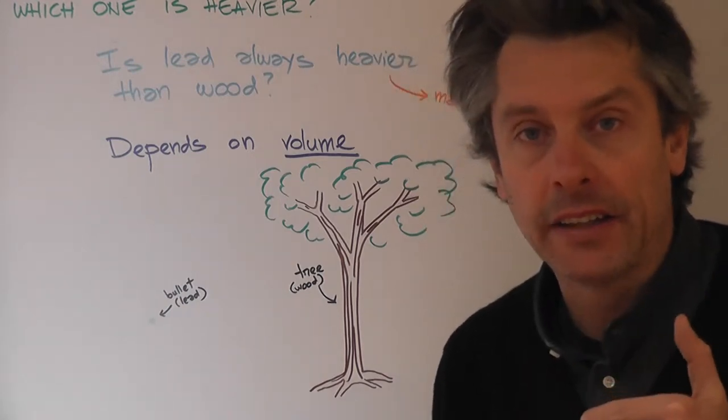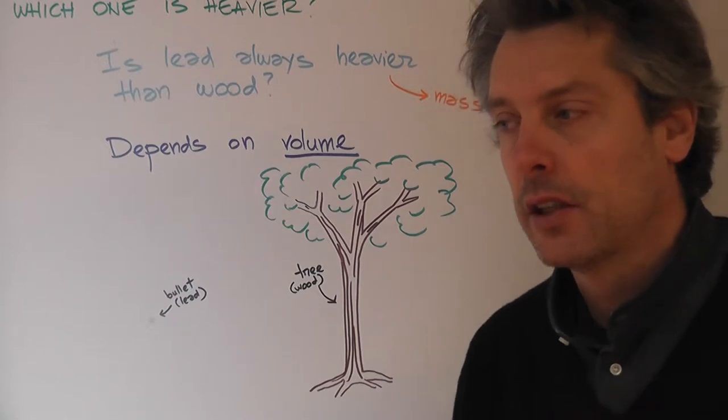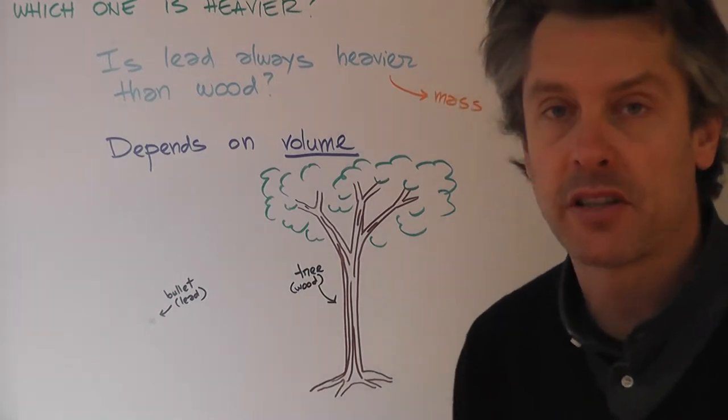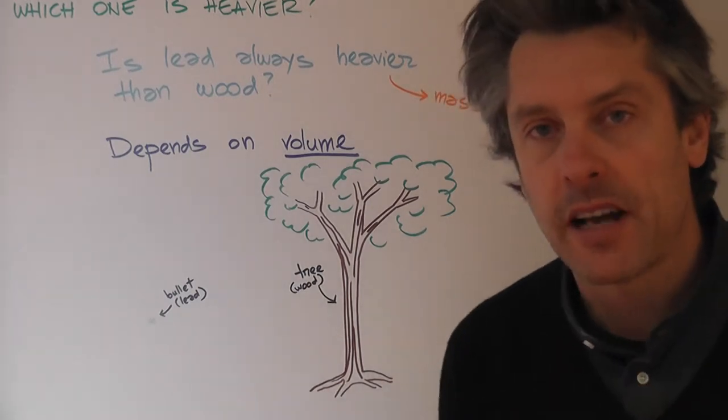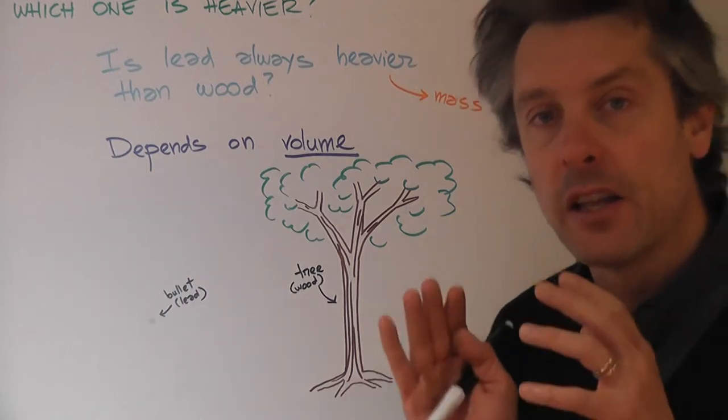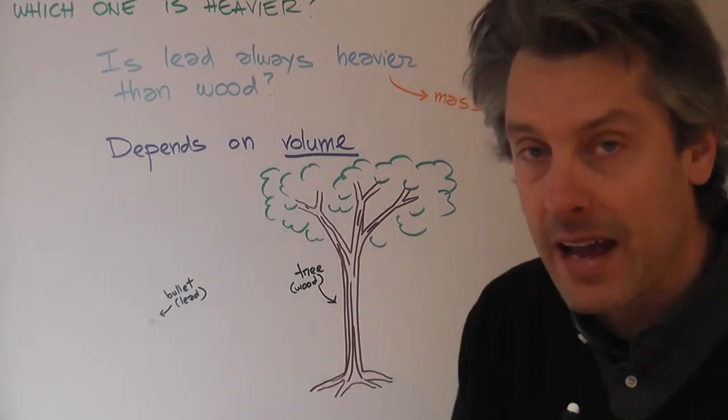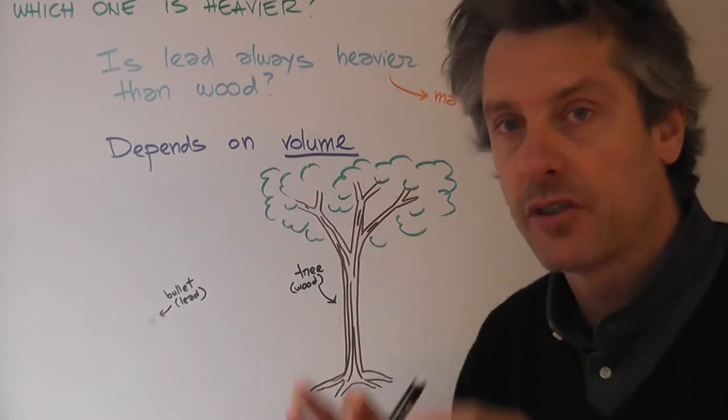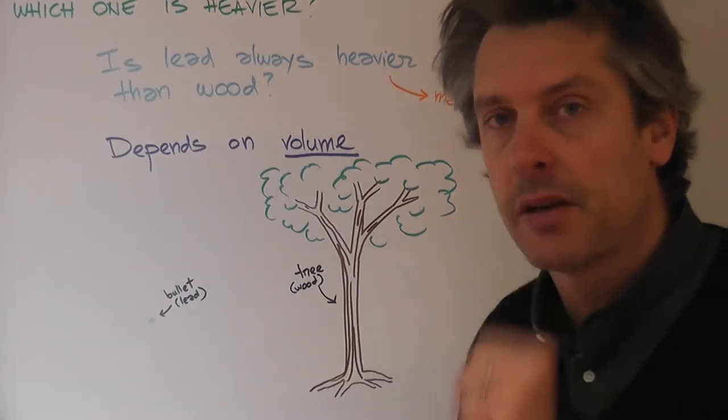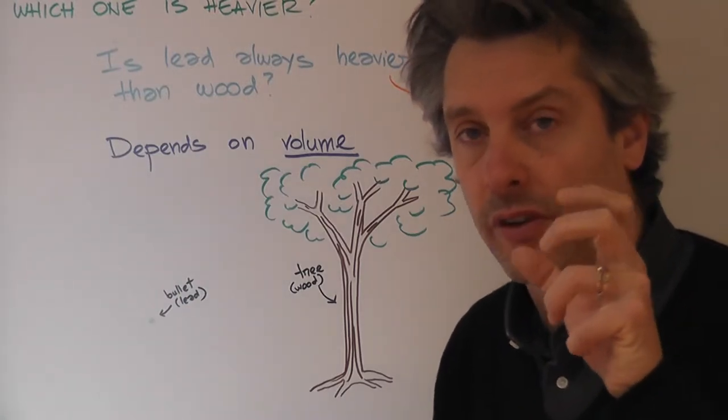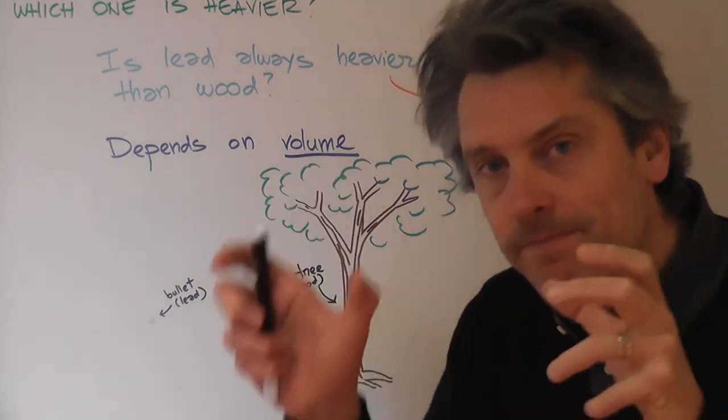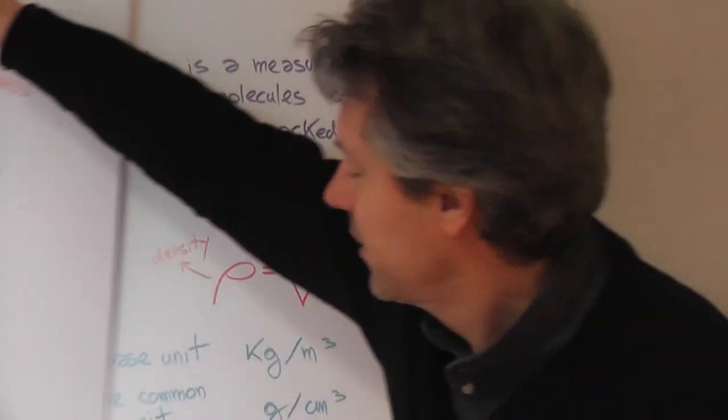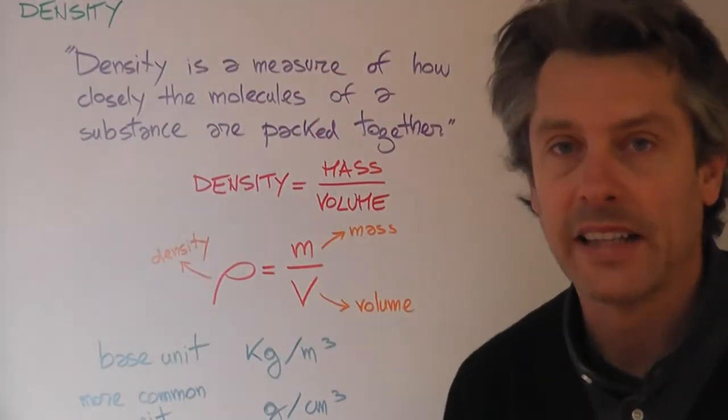On the other hand, a bigger object is not always heavier than a smaller one. It's clear from these examples that we need to define a new quantity that's neither mass nor volume, but helps link the two. Something that tells you if you have this amount of a given substance with this mass, you can work it out somehow. And this quantity is density.